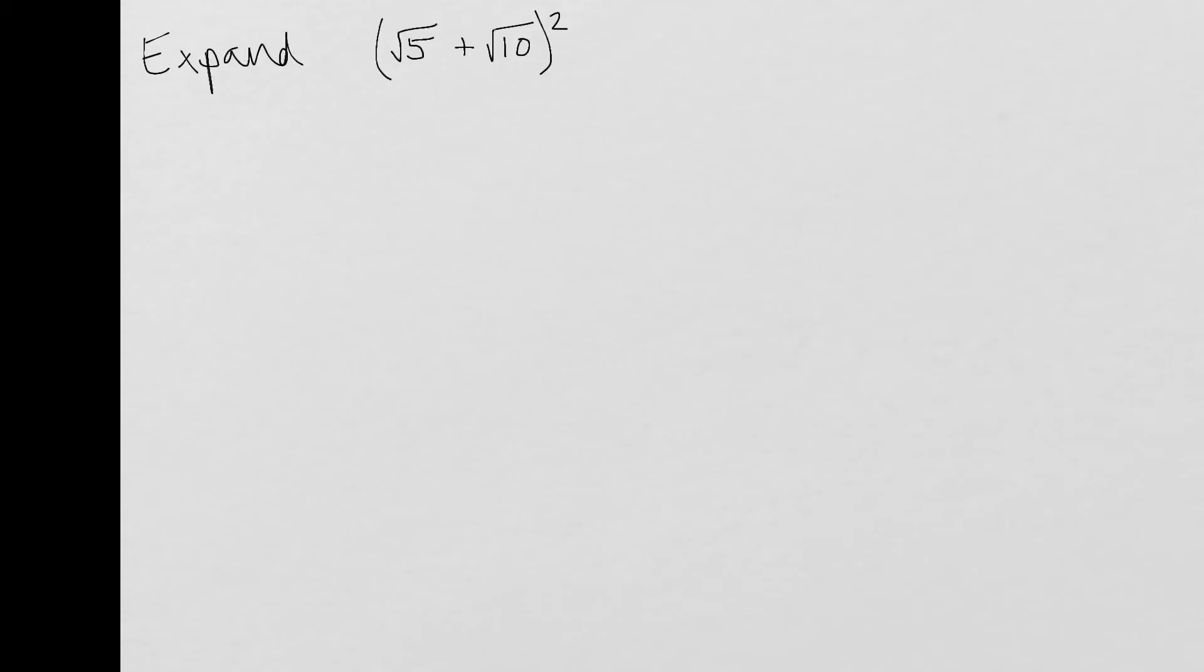Okay so the final example then to have a look at today is where both of the terms inside the bracket are surds or roots. So I've got a √5 and a positive √10. Now although this says squared remember that's not just going to give us 5 plus 10 because squared means times it by itself. So whenever you see that you must remember to write it out like or think about it like this first. And then I've got √5 and again positive √10. So √5 times by √5 is just going to give me 5.